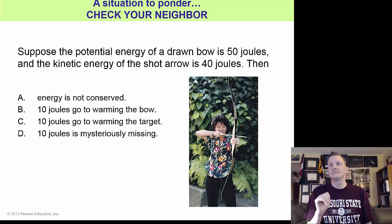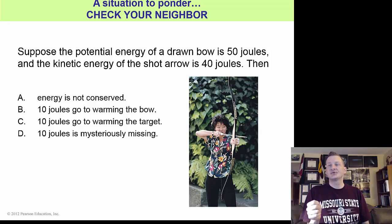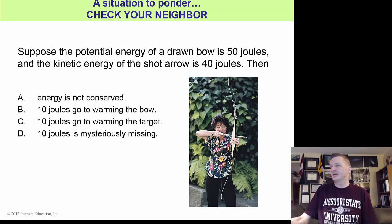Here is the question. Suppose the potential energy of a drawn bow is 50 joules and the kinetic energy of the shot arrow is 40 joules. Which one of these is going to be considered correct? Energy is not conserved. 10 joules goes to warming the bow. 10 joules goes to warming the target. Or 10 joules is mysteriously missing. Let's see if we can get an answer on this.